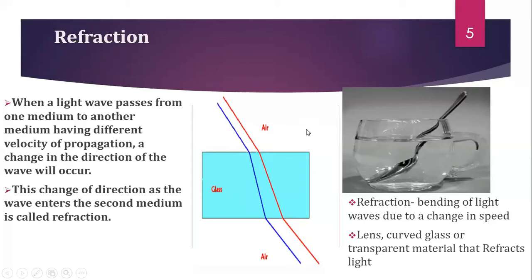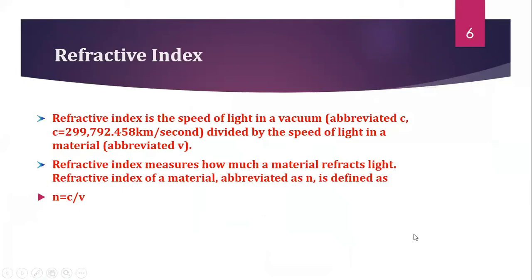Let us observe some examples in our day-to-day life. For example, when a pencil or a spoon is partially immersed in water, it appears to be broken at the interface of air and water. When a pencil or spoon is partially immersed in a glass tumbler, it appears bent or broken to the observer, but we know the spoon is not bent at all. The light reaching the observer from the portion of the spoon inside water seems to come from a different direction compared to the part above the water, making the spoon appear displaced at the interface.